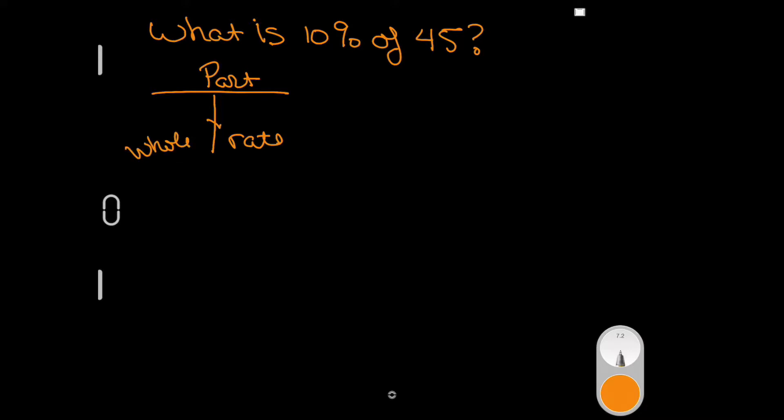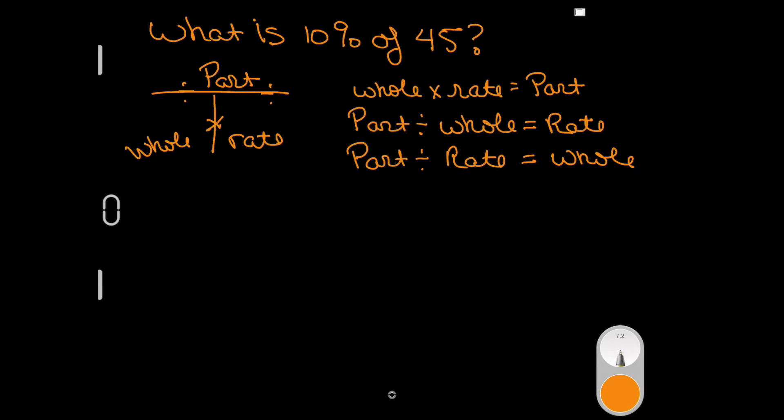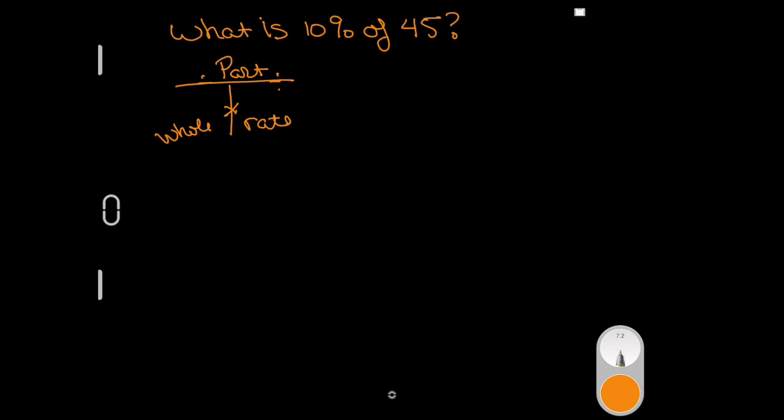In this instance when we think about filling out a T-Bar, we're going to think part, rate, and whole. If you have the bottom two you multiply, if you have a top and a bottom you divide. We know a whole times the rate equals a part, we know part divided by whole equals a rate, and we know part divided by a rate equals whole.